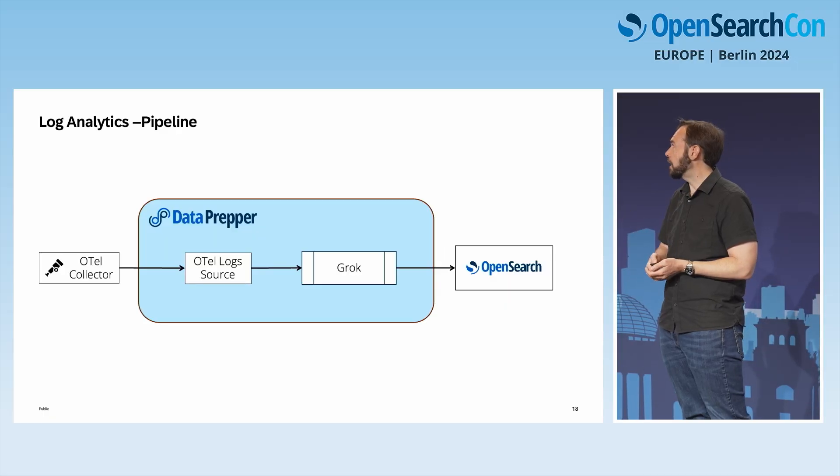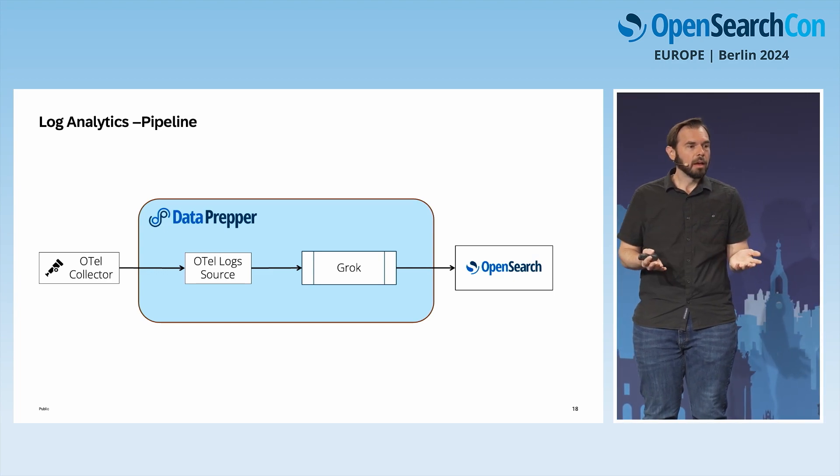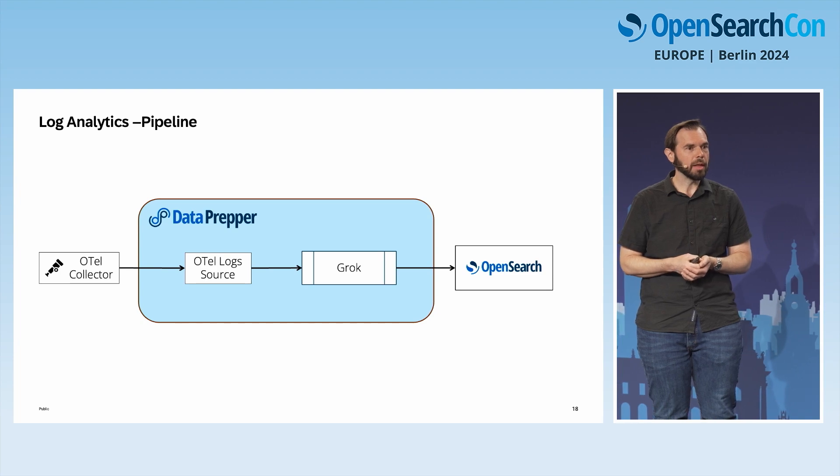A few other processors worth mentioning: we have a key-value processor for parsing key-value patterns, a JSON parsing processor, and an obfuscation processor that allows you to mask certain values before sending to OpenSearch. Finally, we also have a metrics analytics pipeline — it looks very similar but typically without processors. OTEL goes directly to our OTEL metric source in DataPrepper and then to OpenSearch.